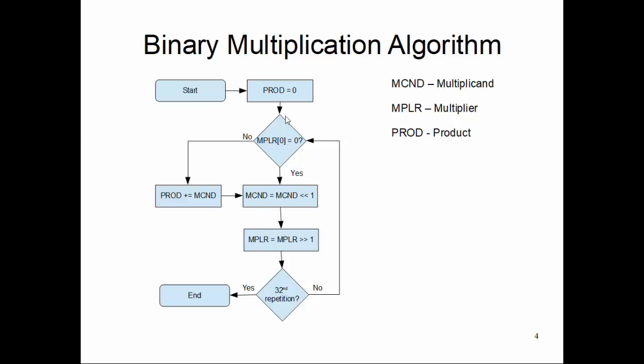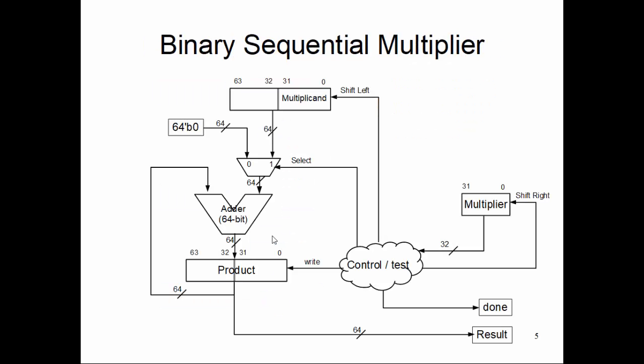We deploy a 64-bit product register. Since it is 64-bit for a 32-bit machine, the product storage is going to be 64 bits. So we have 64-bit for product, 64-bit for multiplicand, and 32-bit for multiplier.